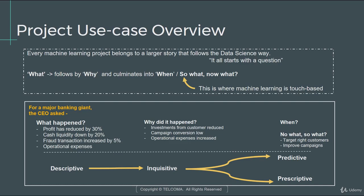This is a candidate set of answers the CEO would receive in response to his question. This news is definitely not encouraging. There is definitely a concern, and he would try to see how he can circumvent the situation. To better understand what happened, the next follow-up question would be: why did it happen? You say that profit has reduced by 30%, but why did it actually happen? Cash liquidity is down and cash transactions have increased — are there any reasons this has happened?